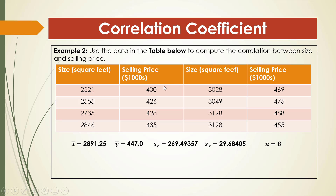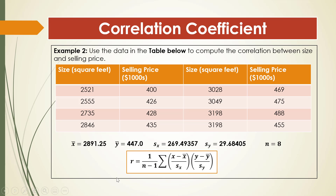Don't forget the formula: r = 1/(n−1) × Σ[(x − x̄)/sₓ × (y − ȳ)/sᵧ]. We make a table with columns for x, y, (x − x̄)/sₓ, and (y − ȳ)/sᵧ. For the first row: (2521 − 2891.25) / 269.49357 = −1.3738732. For y: (400 − 447) / 29.68405, and so on for all 8 rows. Next, we multiply corresponding entries from column 3 and column 4 — for example, −1.3738732 × −1.5833419 = 2.1753110. We finish this for all 8 rows, add up the 8 products to get 6.3041423, then divide by 7 (which is n − 1 = 8 − 1). The correlation coefficient is r = 0.9006.